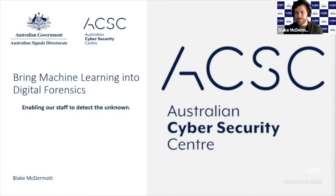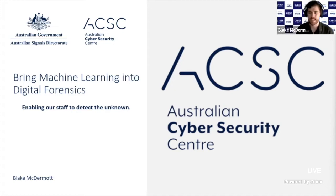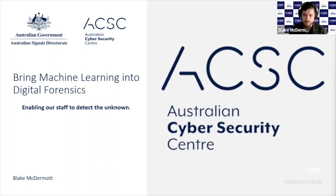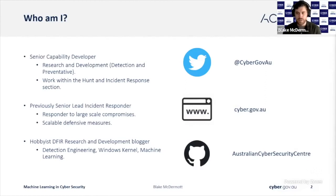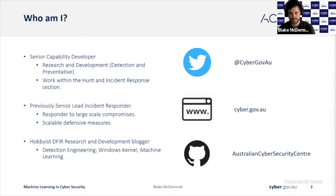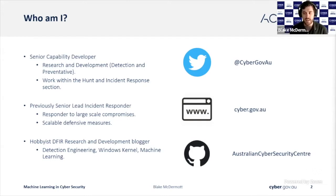Good morning, everyone. My name is Blake McDermott, and I'm going to be speaking about how the ACSC has been implementing machine learning to help better protect Australia from the unknown. I'm a senior capability developer within the hunt and incident response team at the ACSC. I primarily focus on developing new ways to detect, monitor, and prevent actors on Australian networks.